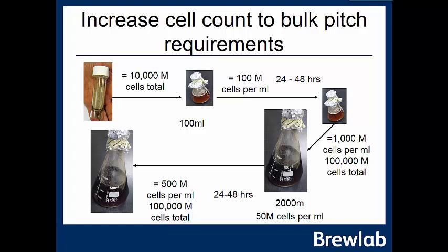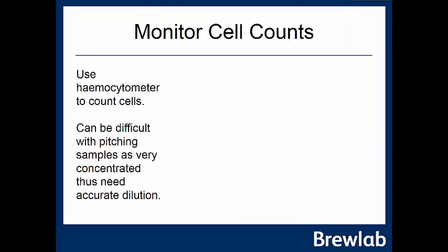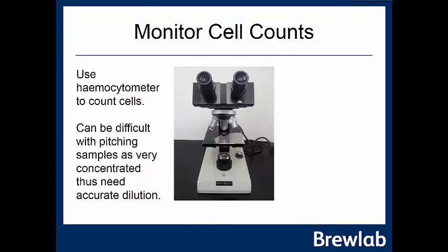Pitching into 2 litres and growing for 24–48 hours, we can get up to 500 million cells per millilitre or even 100,000 million cells per millilitre variously. So somewhere between 2 and 4 litres will give us enough to pitch a full 20-litre brew. This will vary according to factors such as wort strength and oxygenation. Temperature also controls how quickly this happens, so we must be careful not to overshoot or undershoot the 24–48 hour window.